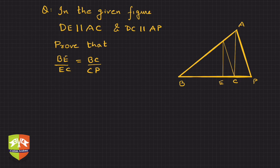Hi friends, so in this question it is given that DE is parallel to AC. So let's figure out where is DE. Point D is this point, so DE is parallel to AC, and DC is parallel to AP. Okay, and you have to prove that BE by EC is equal to BC by CP.